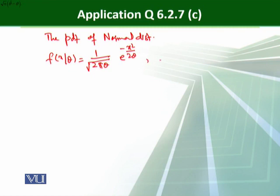And as I said, the normal distribution has a range from minus infinity to plus infinity. And here it is also given that the expected value of x is 0, and the variance of x is theta. It is given in the question.